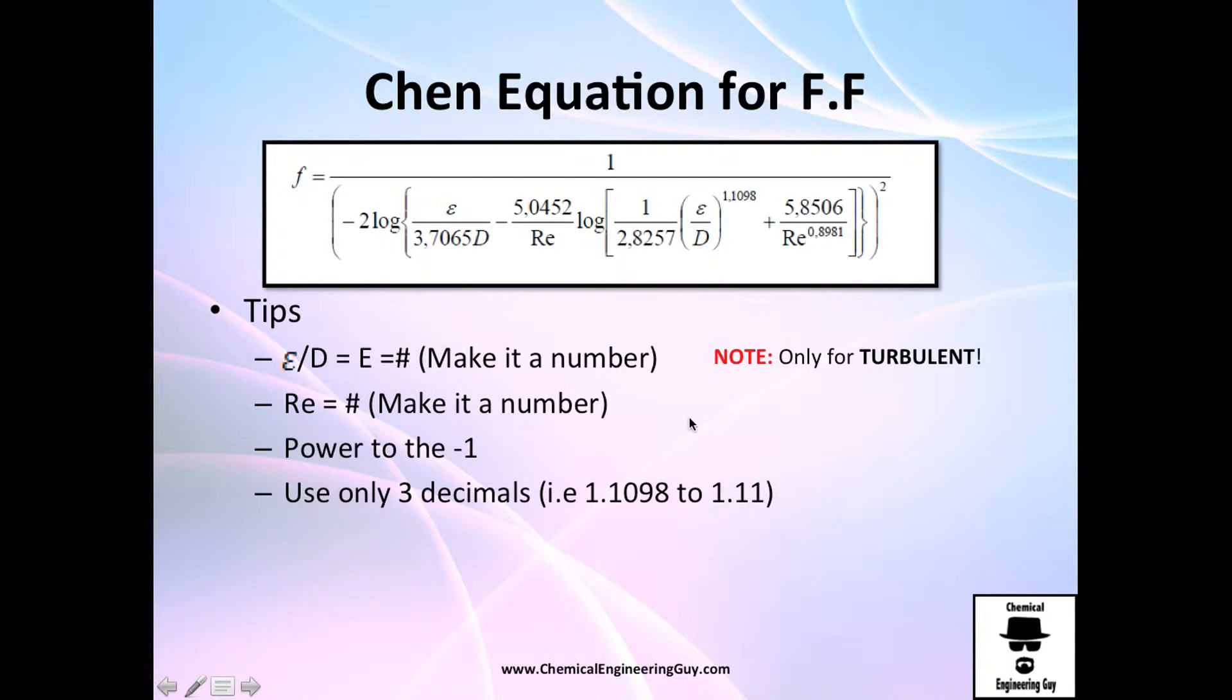My personal tip if you're using it by hand, in a computer, or in a calculator, is to calculate by hand this value relative roughness and make it a number. For the Reynolds, do it as well, because if you're going to plug in the rho V D divided by mu in every single one of them, I think it's not that easy.